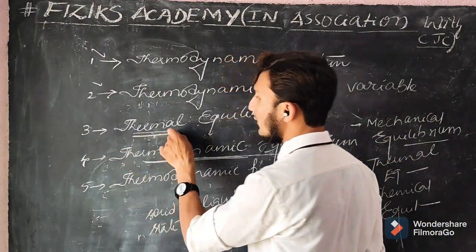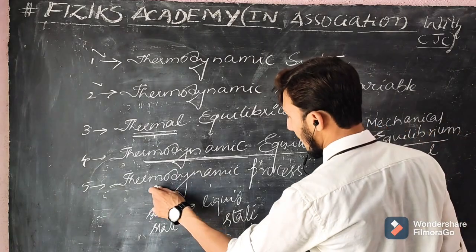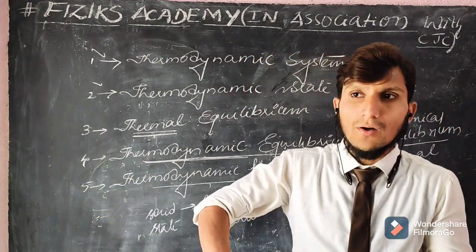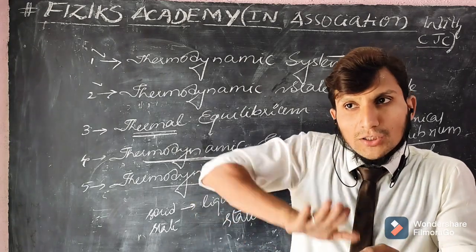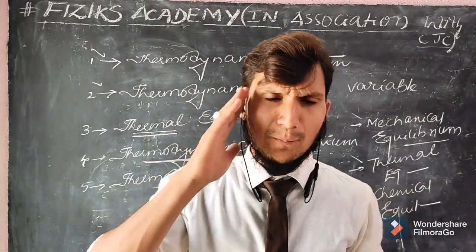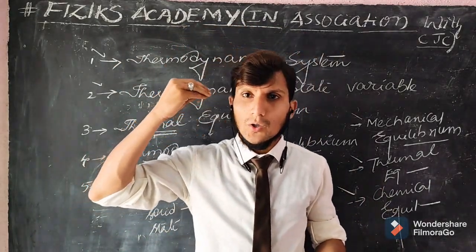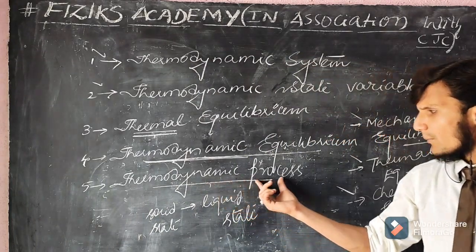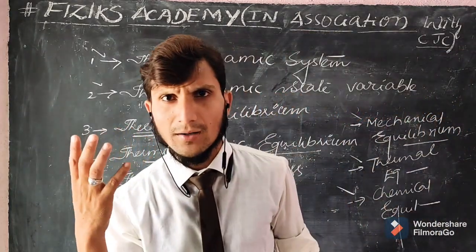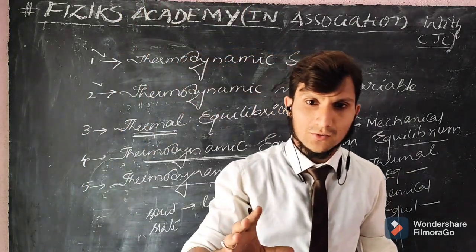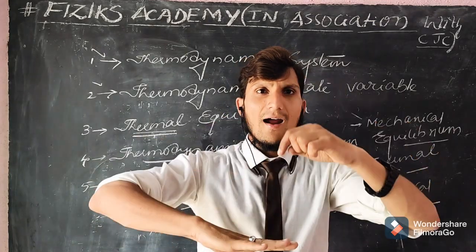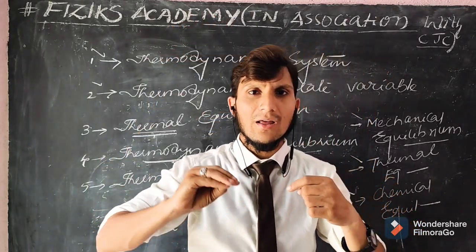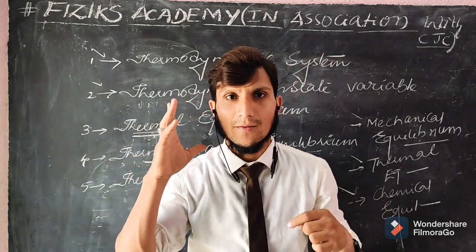Remember: thermal equilibrium is different from thermodynamic equilibrium. Thermal equilibrium refers only to same temperature. A thermodynamic process is the passage of a thermodynamic system from an initial state to a final state. The concept is simple — melting of ice is a thermodynamic process, and the complete process takes place at a constant temperature.